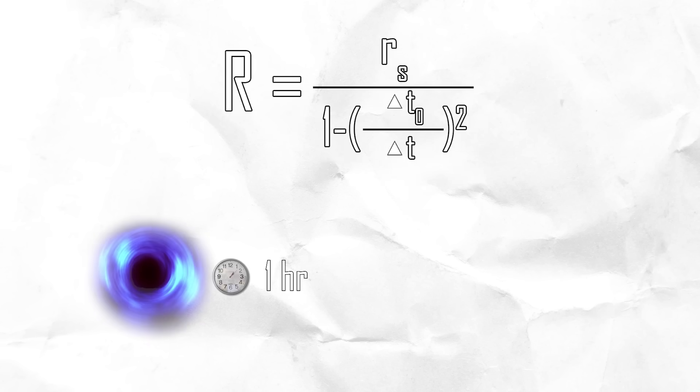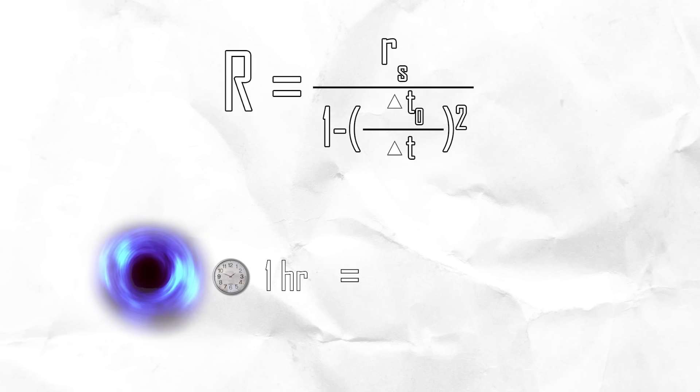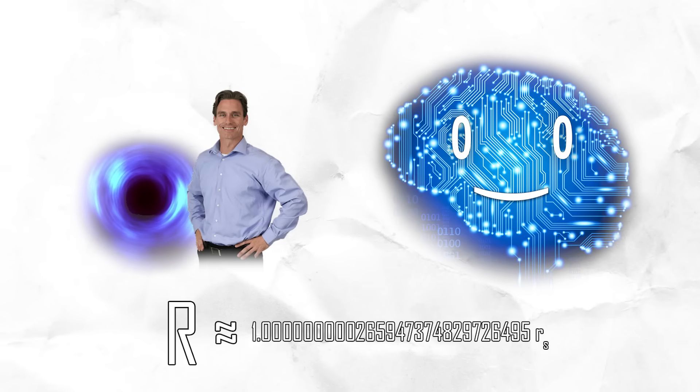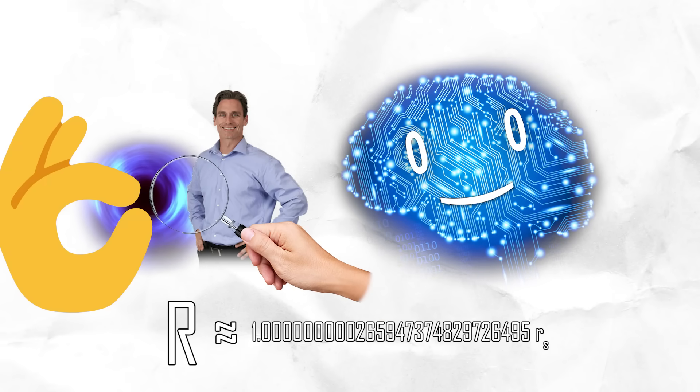For instance, if you want one hour next to a black hole to equal seven years on earth, input the numbers and you get this. This means you would have to be absurdly close to the event horizon, less than a billionth of its radius away from it.